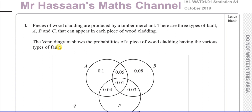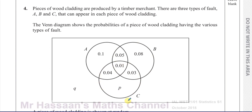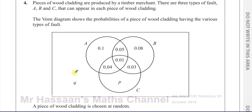It says pieces of wood cladding are produced by a timber merchant. There are three types of fault A, B and C that can appear in each piece of wood cladding. The Venn diagram shows the probabilities of a piece of wood cladding having the various types of fault. The ones in this circle have type A fault, this circle type B, this circle type C, and the ones outside all three circles don't have any of those three types of fault.